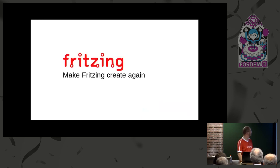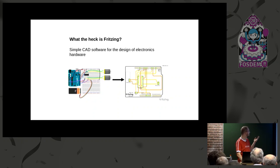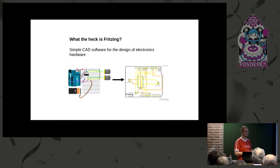So let's make Fritzing great again. I guess most of you already know the project. For those who don't, it's like a CAD software for creating electronic boards. It's very simple, so it can also be used by students — like pupils, maybe 12 to 16-year-olds.